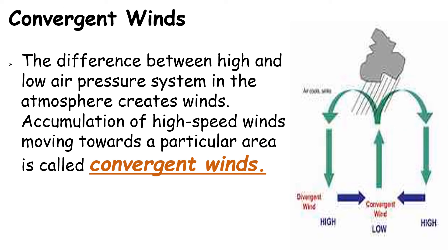The difference between high and low pressure systems in the atmosphere creates wind — that is the convergent winds. Convergent winds are the accumulation of high-speed winds moving towards a particular area. Once the winds converge they will move, and depending on the speed and strength of the wind, that is what creates convergent winds.